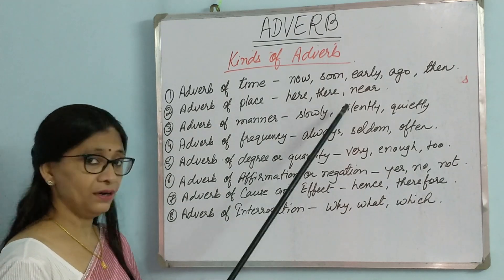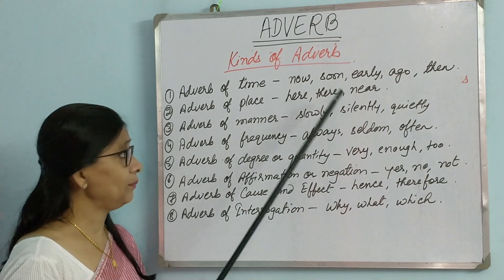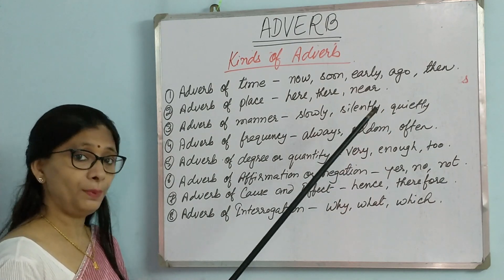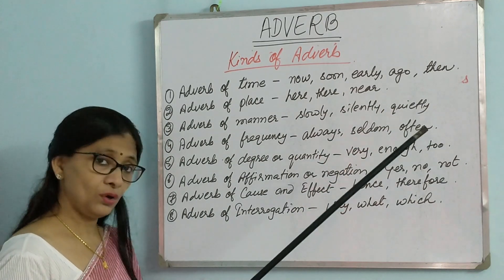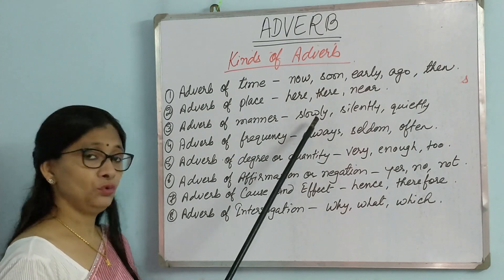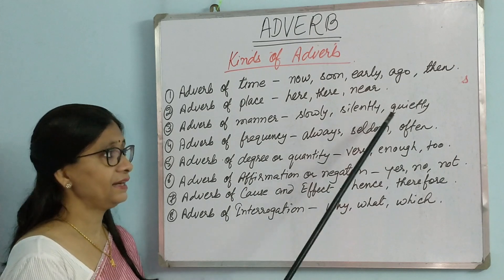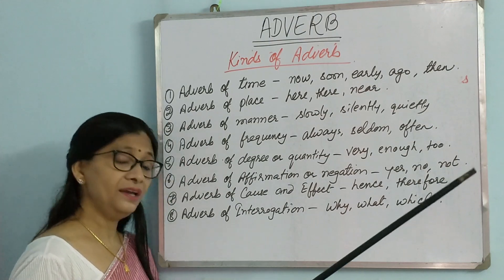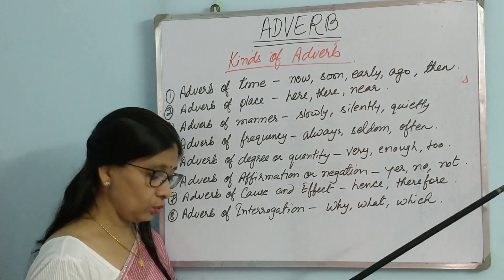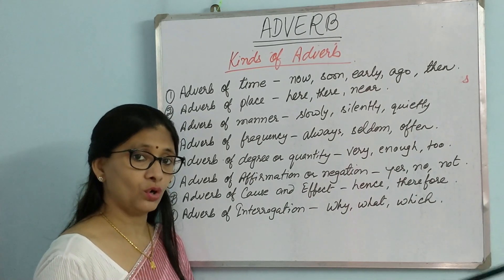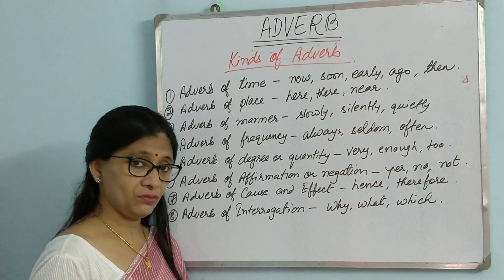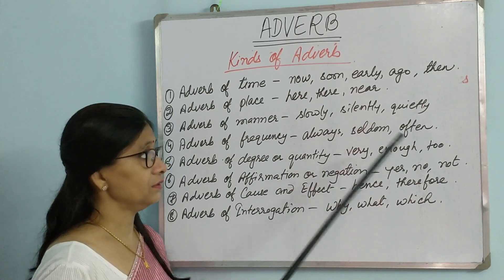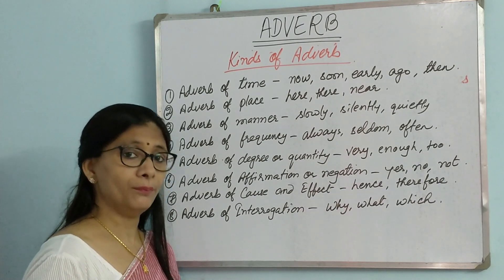Examples of adverb of place: 'They came here' and 'The girl ran downstairs' — 'downstairs' signifies a place. Then adverb of manner — if you see words like slowly, silently, quietly in sentences, they are adverbs of manner. Examples: 'He spoke rudely,' 'She answered cleverly,' 'He solved the sum easily.' These signify the manner or way in which something is done.